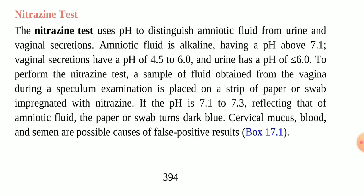The nitrazine test uses pH to distinguish amniotic fluid from urine and vaginal secretions. Amniotic fluid is alkaline with a pH above 7.1, vaginal secretions have a pH of 4.5 to 6, and urine has a pH of less than 6.